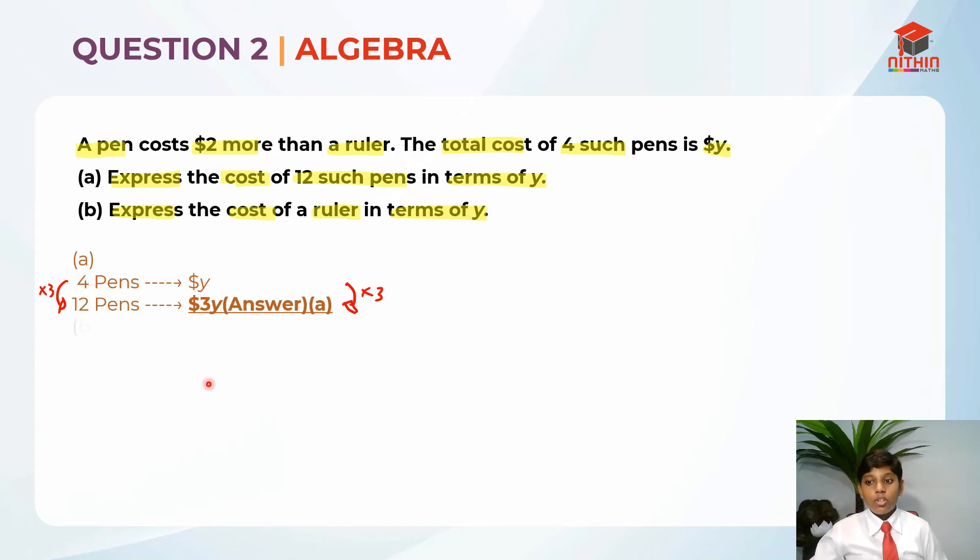Let's move on to part B. First, I find one pen which is Y over 4 dollars. Or you can also write 1 quarter Y. It's the same thing. Y over 4 and 1 quarter Y is the same thing. So you can write either one.